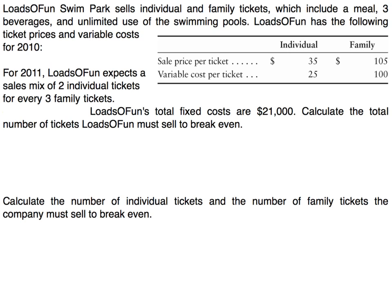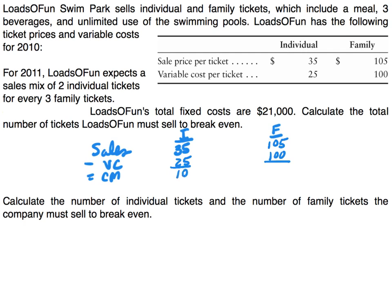The first thing we want to do is set up a little spreadsheet to calculate our weighted average contribution margin. We'll set up contribution margin income statements: sales minus variable cost equals contribution margin. The sales price for individual tickets is $35 and for family tickets is $105. Variable cost for individual is $25 and for family is $100. So the contribution margin for individual is $10, and for family is $5.